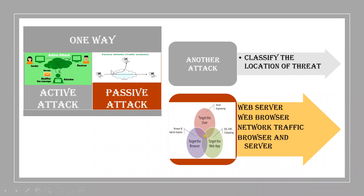Based on that, the threats that are happening are divided in two ways. One way is active attack and passive attack. The other way is locating the threat, or after locating the threat, classifying the types of threat at each location. Active attack is modifying the message that is sent to the server side from the client. Passive attack is not just modifying the messages — it completely takes control by monitoring the traffic analysis of a network. The other way, when seeing about the classification of locating the threat, it might be in different cases. The threat might be in the web server, the browser, or in the network area through which the data is transmitted from one end to the other end.